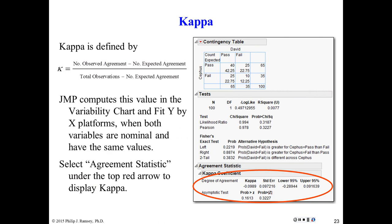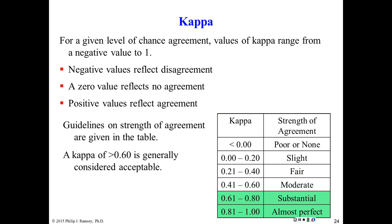For David and Cephas, JMP calculates the Kappa coefficient. The key for you is to understand it's the amount of agreement over and above random chance, how much real agreement exists.